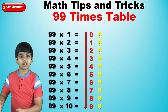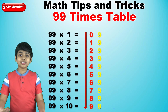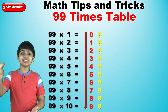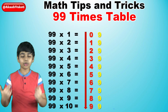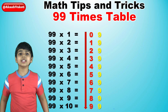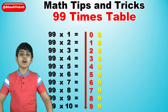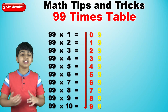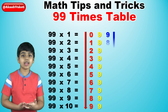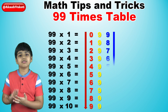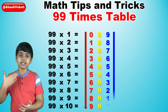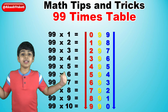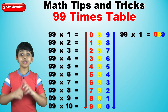Then the rightmost column is just the numbers from 9 to 0 in descending order, going back the other way. So that would be 9, 8, 7, 6, 5, 4, 3, 2, 1, and 0.